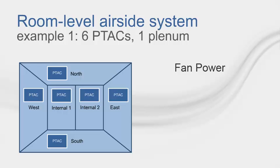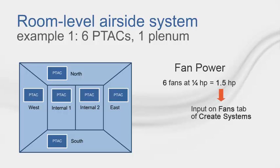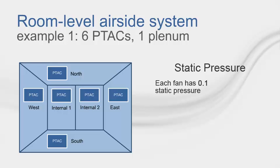Here is another modeling tip regarding fan information. Pretend you take the six room building model and each room gets a PTAC unit, all the same size, which means you only have one system. To correctly model this on the fans tab, you should add up the fan powers. If each PTAC has a quarter horsepower fan and there are six fans, then the horsepower you would input would be one quarter times six, which is 1.5 horsepower. The static pressure is a little different — if each fan sees 0.1 inch of static, then you would only enter 0.1 inches of static.